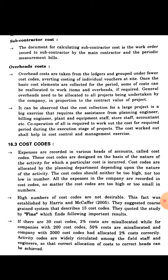Cost codes are allocated by the planning department depending upon the nature of the activity. There are a number of activities like concrete work, steel work, wooden work, glass work, etc. All these different activities are given different cost codes. The cost code should neither be too high nor too low in number, and all expenses in a company are recorded using a cost code.